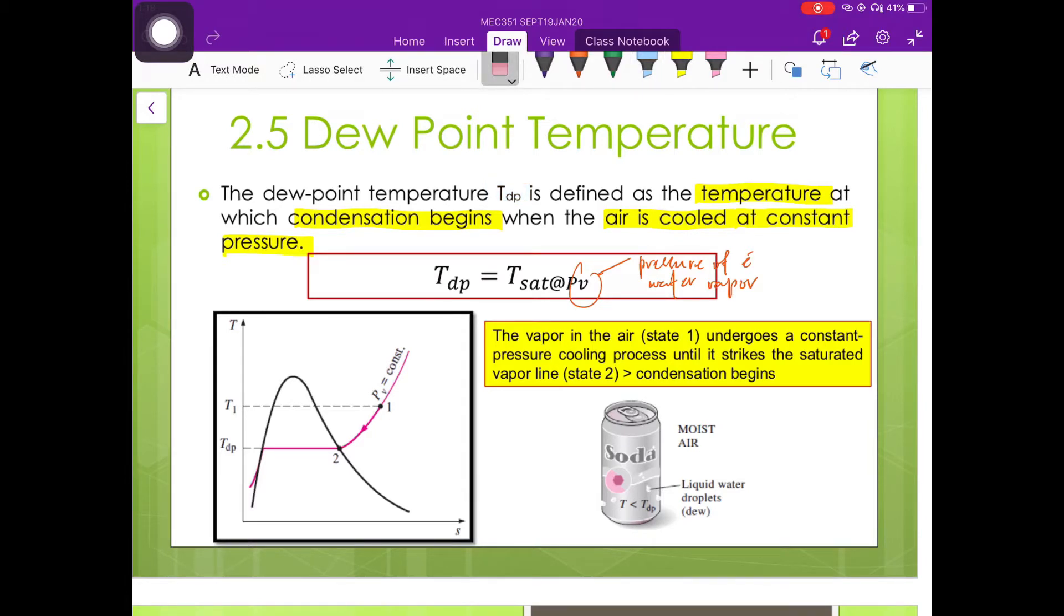Dew point temperature can be defined as the temperature at which condensation begins when the air is cooled at constant pressure. Tdp is equal to saturation temperature at the pressure of water vapor.